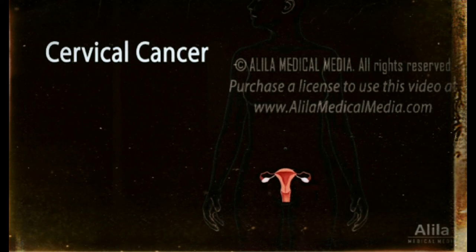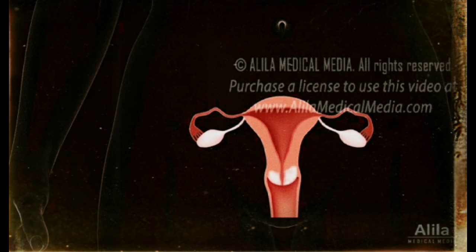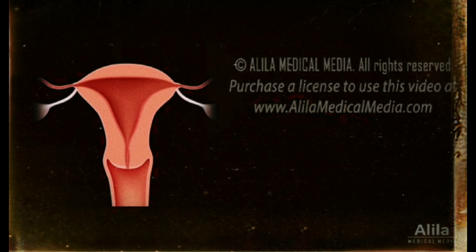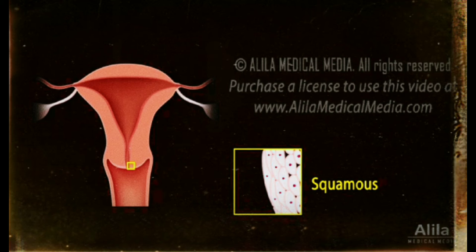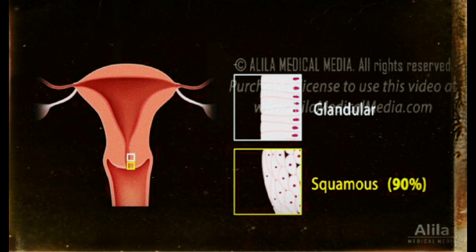Cervical cancer is a type of cancer that occurs in the cells of the cervix, the lower part of the uterus that opens into the birth canal. It is one of the most common types of cancer in women worldwide, but also one of the most preventable. The cervix has two major cell types: the flat squamous cells lining the outer part and column-shaped glandular cells covering the inside of the cervical canal. Both types can become cancerous, but squamous cell carcinomas are much more common.